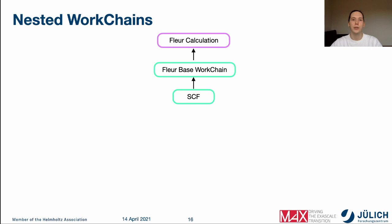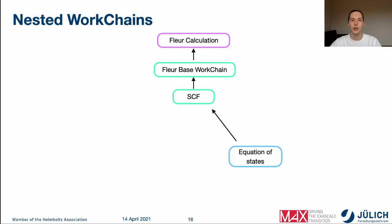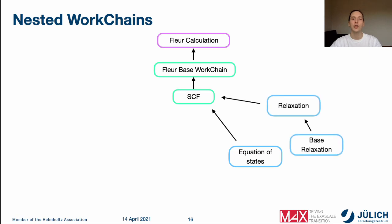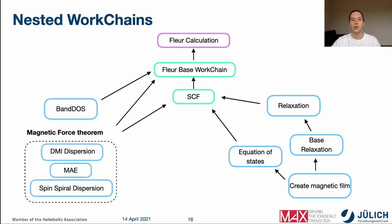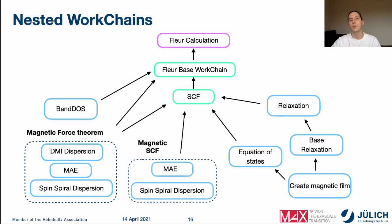Let's look at the other work chains implemented in the AIDA Floor package and how they depend on each other. The equation of state work chain uses the self-consistent work chain several times to converge charge densities and calculate total energies for all structures. We also have a relaxation work chain responsible for relaxing atomic positions — for example, calculating the equilibrium distance between layers in a surface. The equation of state and relaxation work chains are used by a higher-level work chain: the create-magnetic-film work chain. We also have density-of-state work chains and work chains for magnetic calculations, including magnetic anisotropic energy, DMI, and spin spiral calculations.